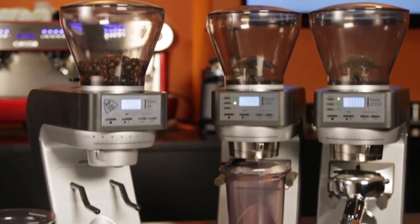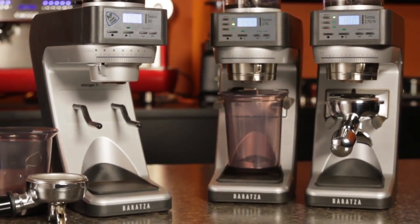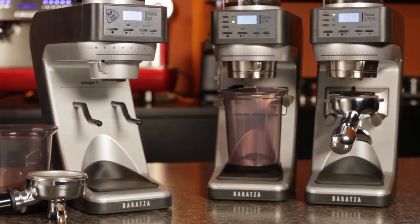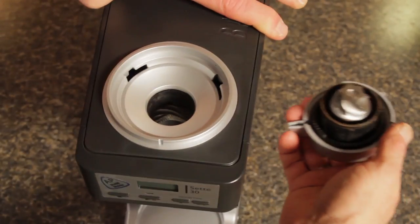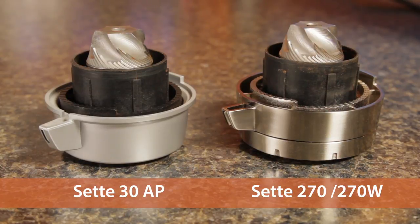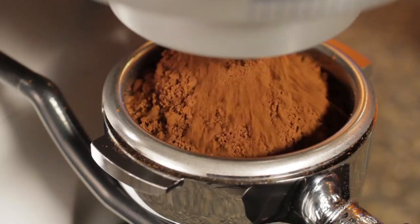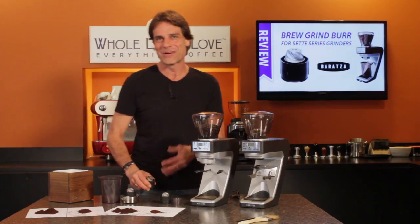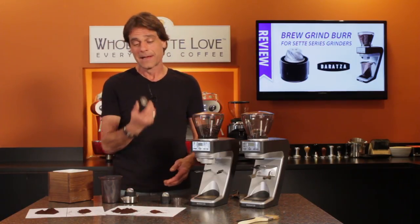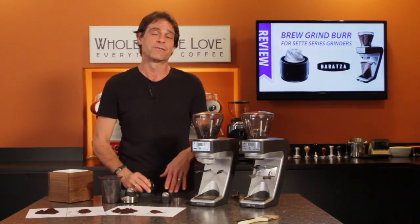Last week, we had a look at the Baratza Setté 30 AP, which joined the 270 and 270W in the Setté line. All the Settés come stock with the AP Burr, which is what you want when grinding finer for brew methods like espresso. Hey Espresso & Coffee lovers, Mark here from Whole Latte Love, today a look at the BG Accessory Burr from Baratza.